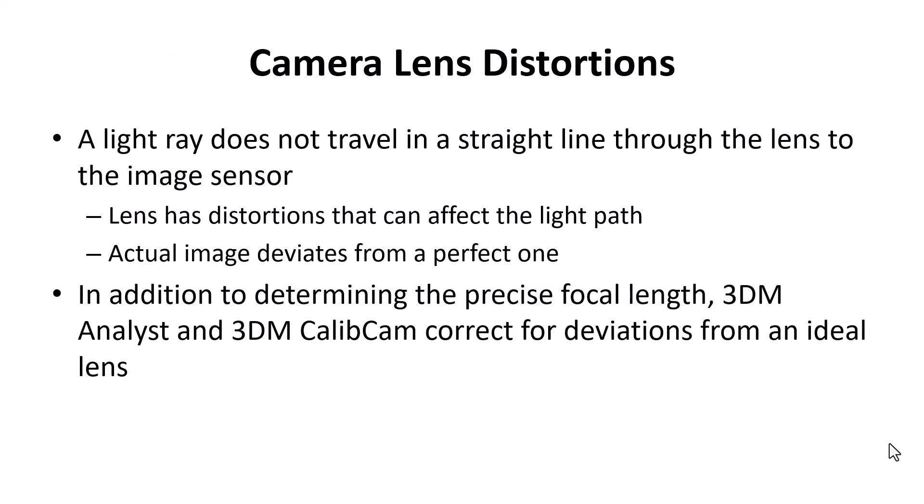All lenses have distortions — there's no perfect lens. That means the image collected on the sensor deviates from what a perfect lens would have generated. So in addition to determining the precise focal length, 3DM Analyst and 3DM CalibCam will find parameters that will correct the deviations from an ideal lens.